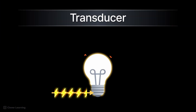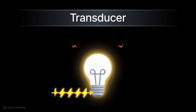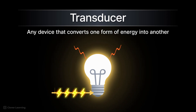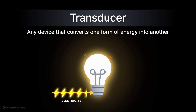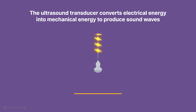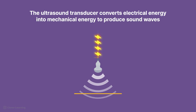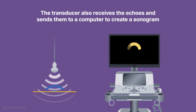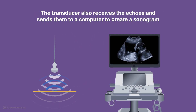Let's start by defining transducer. A transducer is any device that converts one form of energy into another. For instance, a light bulb is a transducer because it converts electrical energy into light and heat. In ultrasound imaging, the transducer is the key device which converts electrical energy into the mechanical energy that produces the sound waves, which bounce off body tissues and make echoes. It also receives the echoes and sends them to a computer that uses them to create a sonogram.